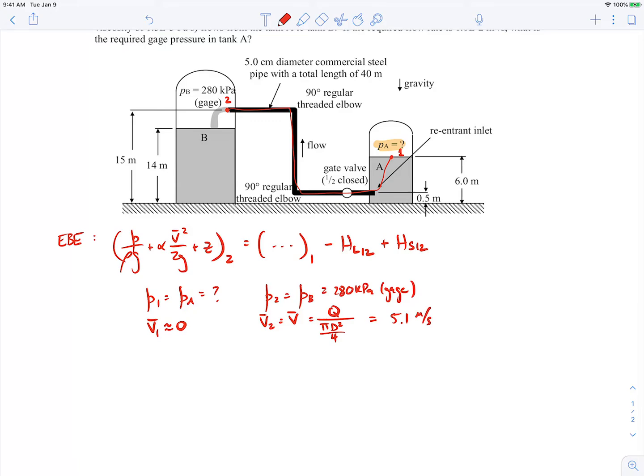All right, Z1 is pretty easy to figure out. That's given as 6 meters, and then Z2 will be 15 meters. So we'll write those down. Then we have to figure out the shaft head term. Well, there are no pumps anywhere between points 1 and 2. No pumps, no turbines, nothing like that, no rotating machinery. So that term will be equal to zero.